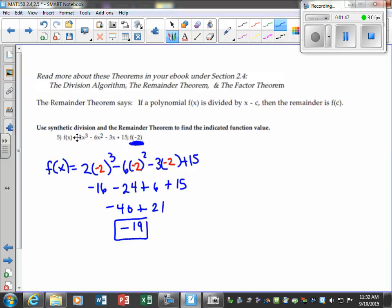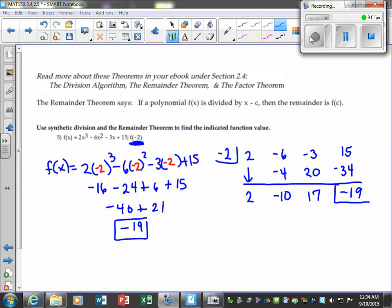Now let's do synthetic division with this. Set up your synthetic division and then work that. When we work it out, we see that the remainder is negative 19, which was in fact the same thing that we got when we evaluated the function at that point.